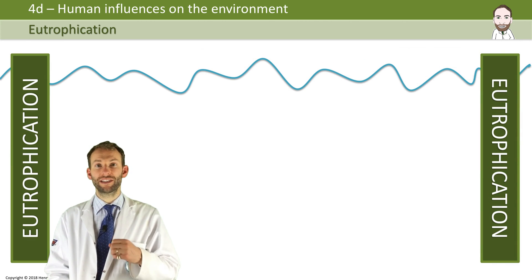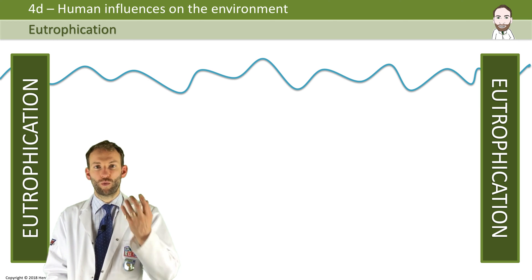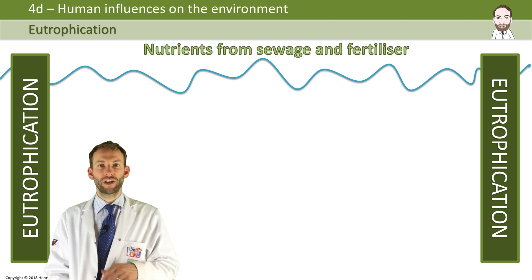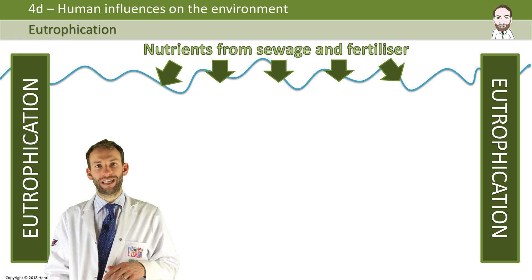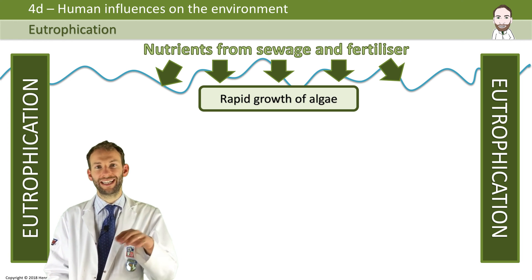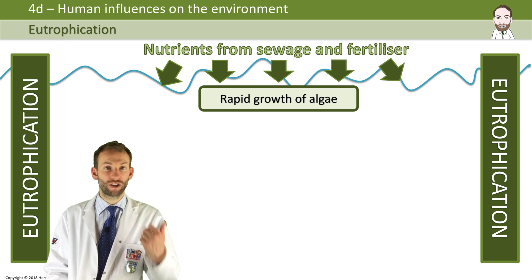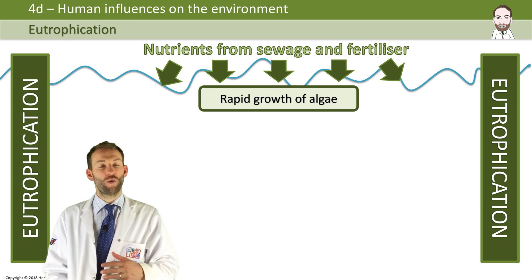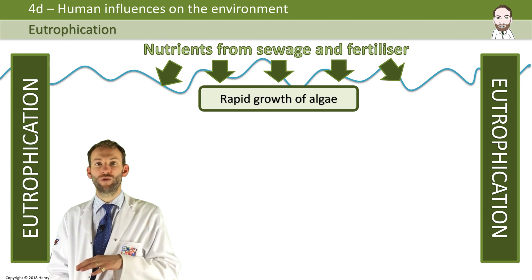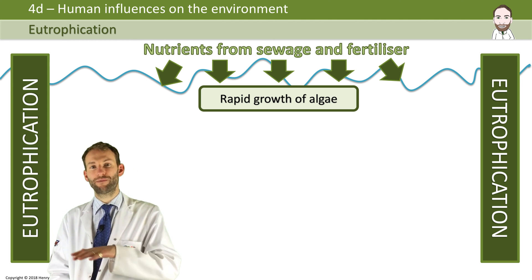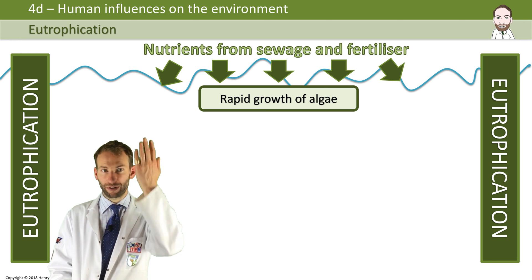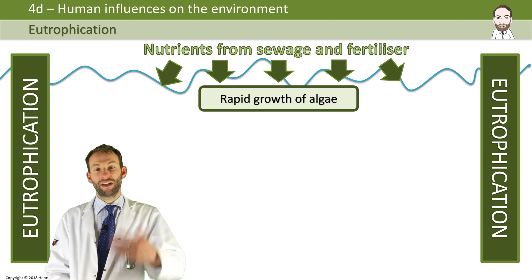What happens is the nutrients from the sewage and the fertilizer get washed off into ponds and rivers and streams, and you get a rapid growth of algae — because suddenly the algae have loads of phosphates and loads of nitrates, so they grow very quickly. You get this big algal bloom forming on the top, which then blocks all the light coming in.